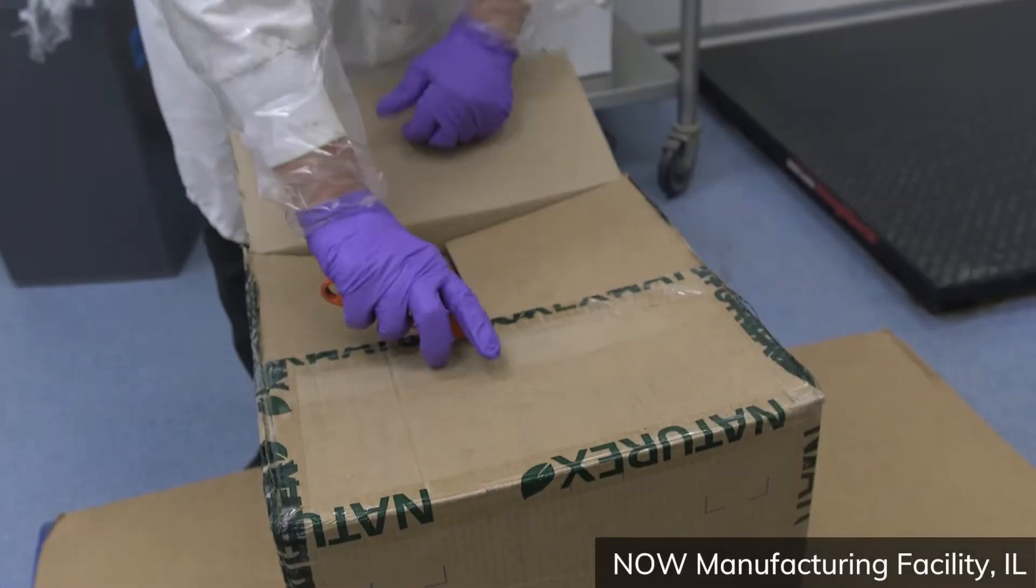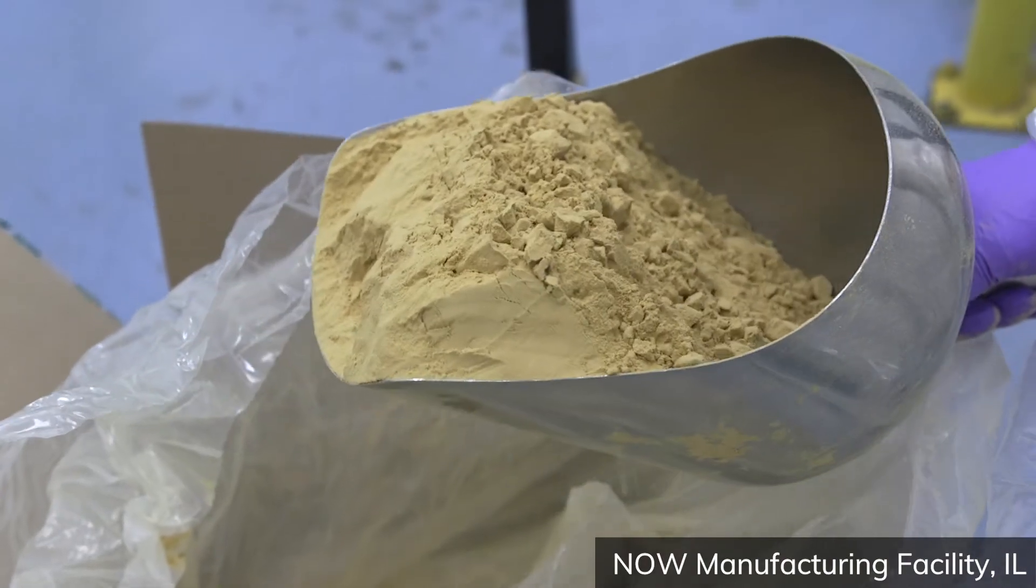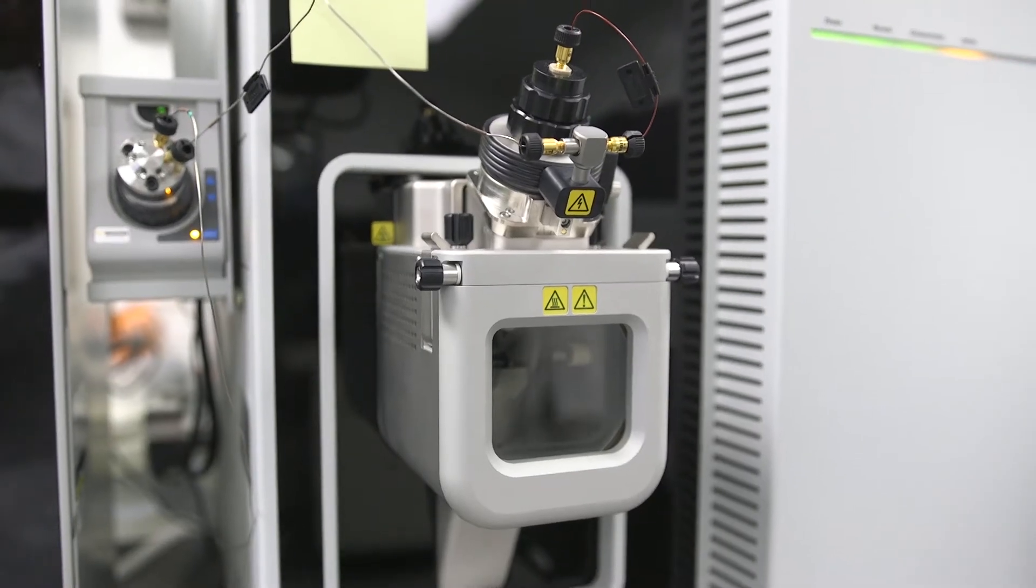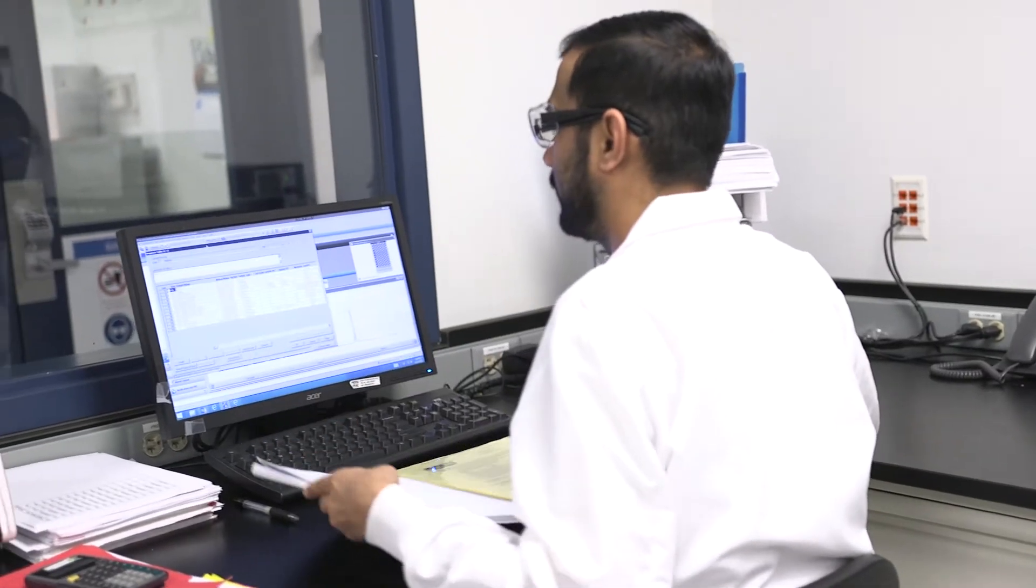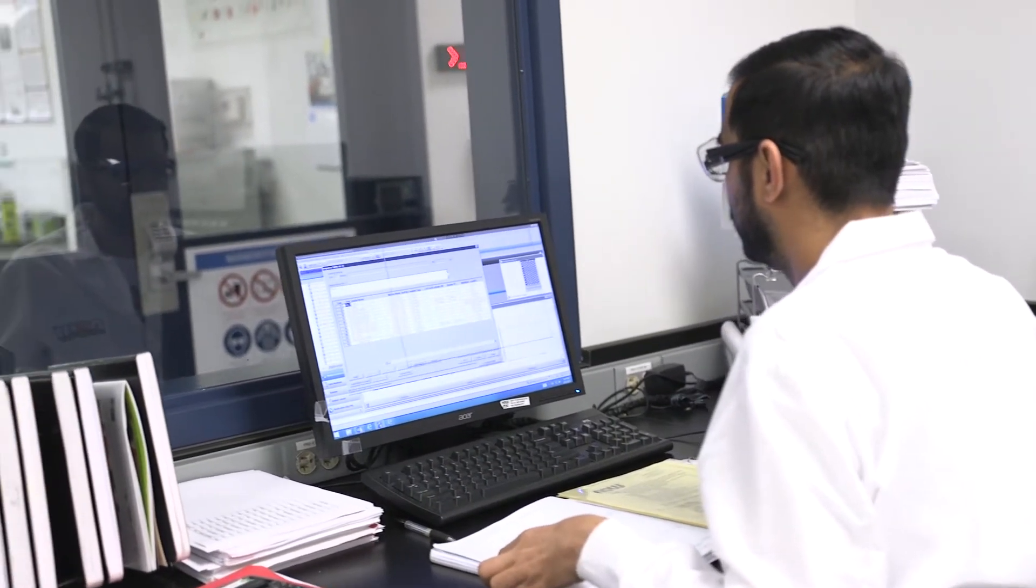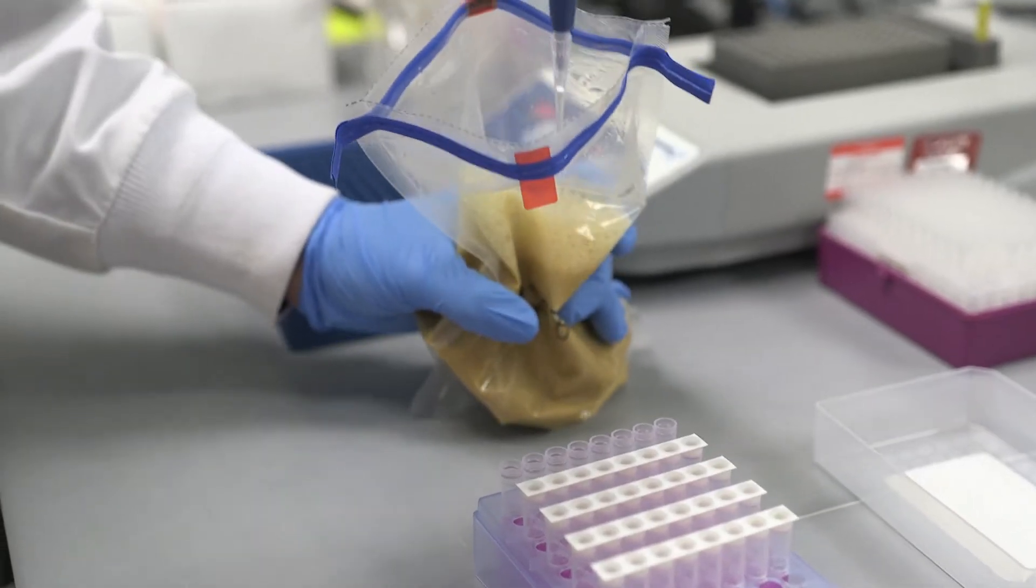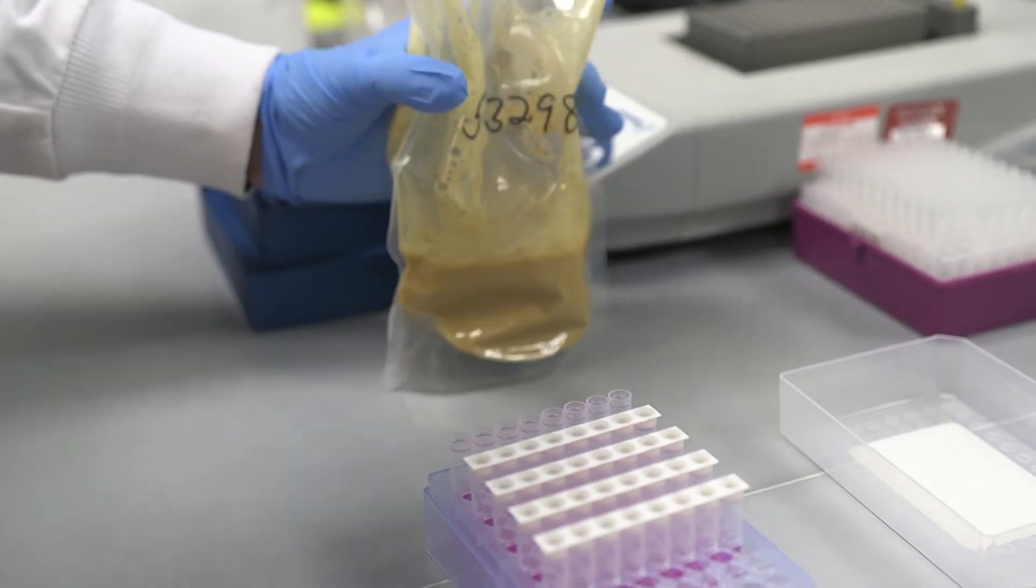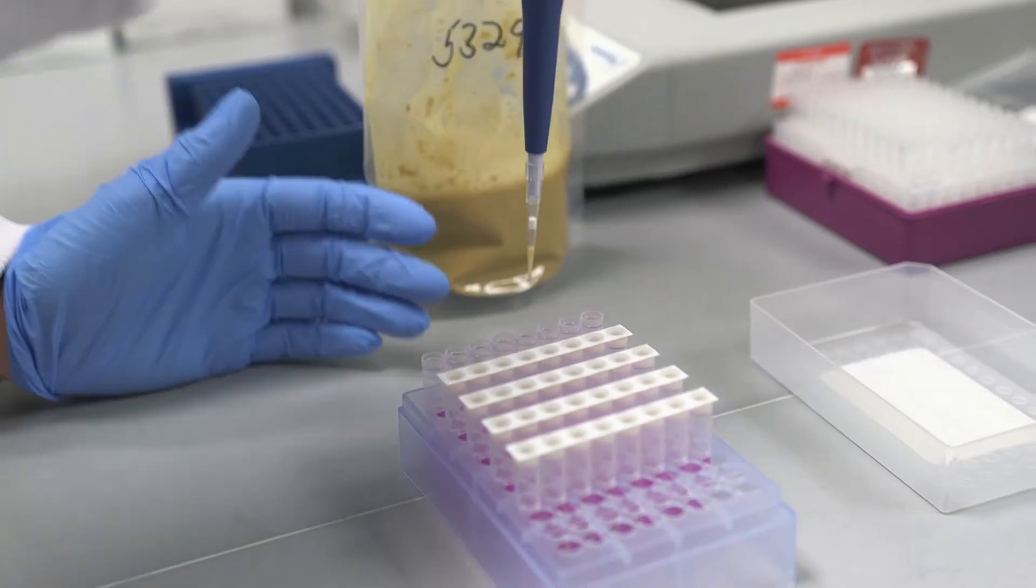Once the material is received here at our facility, we will take a sample of the material and it will be tested in each of our laboratories. It'll be tested for the toxic heavy metals like lead, cadmium, arsenic, and mercury. We'll also test it in the micro lab to make sure that there are no harmful pathogens like Salmonella, E. coli, or Listeria.